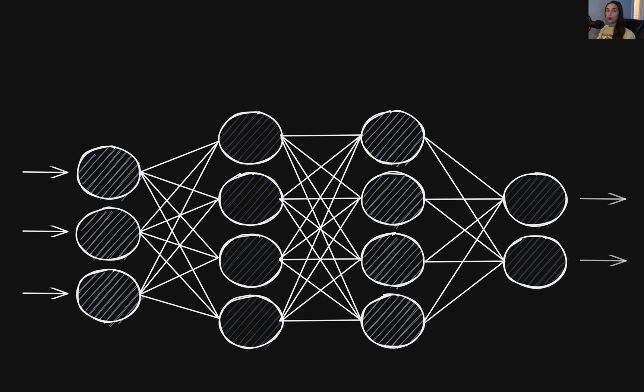Latent diffusion models are generative deep learning models that have skyrocketed in popularity, not only amongst the AI community, but out in the general public as well.